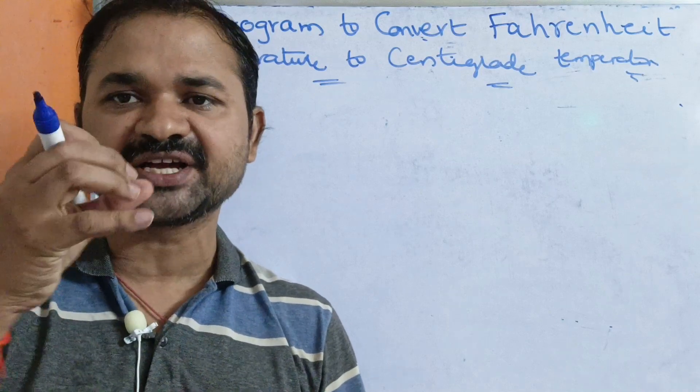Now we will discuss the program: C program to convert Fahrenheit temperature to centigrade temperature. Fahrenheit temperature is input. Fahrenheit temperature is converted to centigrade temperature.